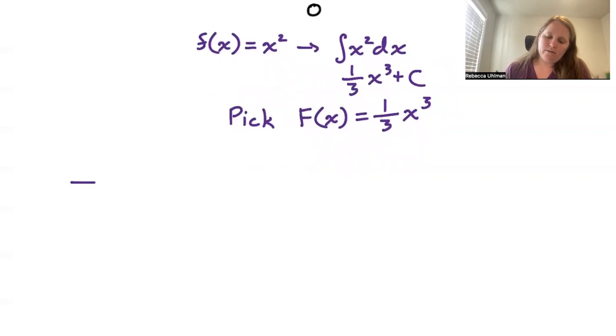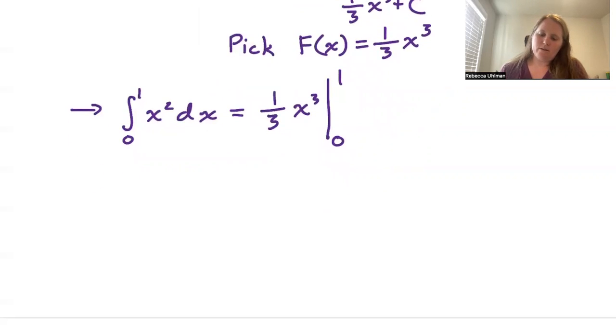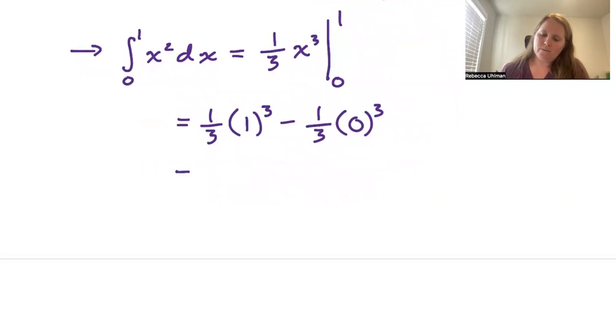And so we have the definite integral from 0 to 1 of x squared dx is equal to one third x cubed, then our vertical line evaluated at our bounds of 0 and 1. So this becomes one third times one cubed minus one third times zero cubed, and this is simply one third.